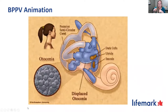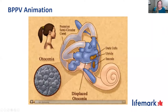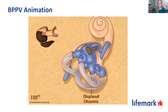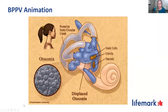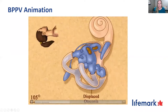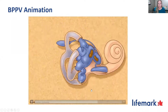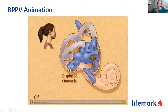In the animation, the brown squiggly areas are where crystals are supposed to be, and the small white dots represent displaced crystals. When the woman lays back, the inner ear moves and the crystals fall into the fluid-filled canal. When she sits back up, they move again but can get stuck. That crystal movement causes fluid movement, which sends a false signal to the brain that the head is moving, producing that brief spinning sensation or vertigo.